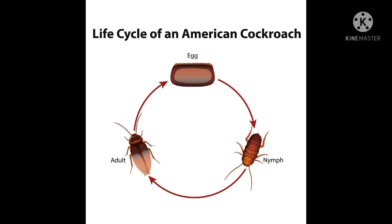This is the life cycle of a cockroach. As you can see, there are three steps in the life cycle of the cockroach. The first is the egg — the adult female cockroach lays eggs.